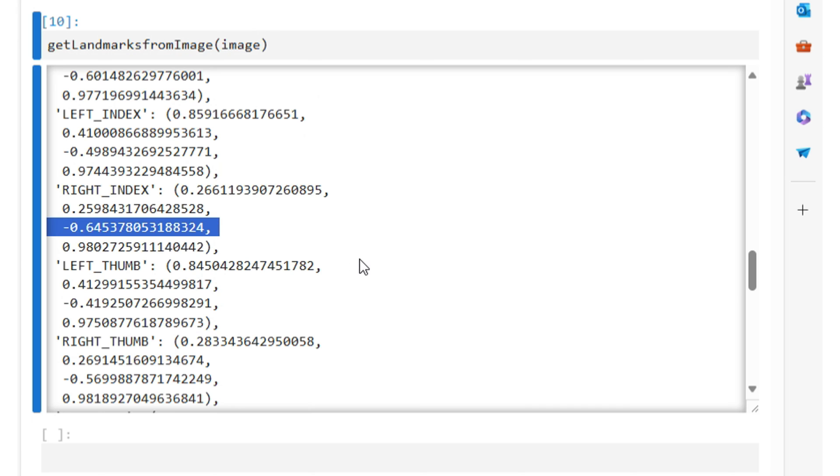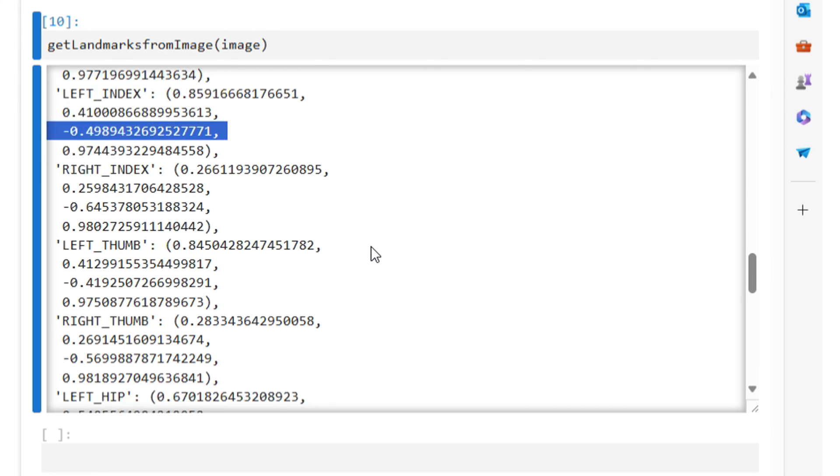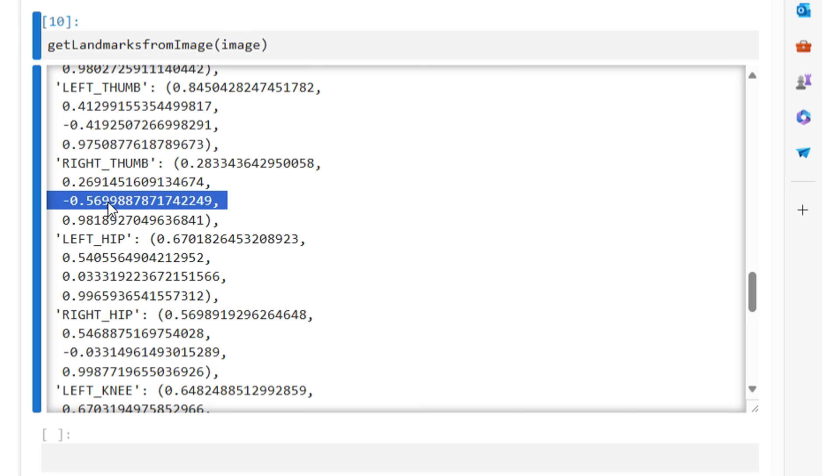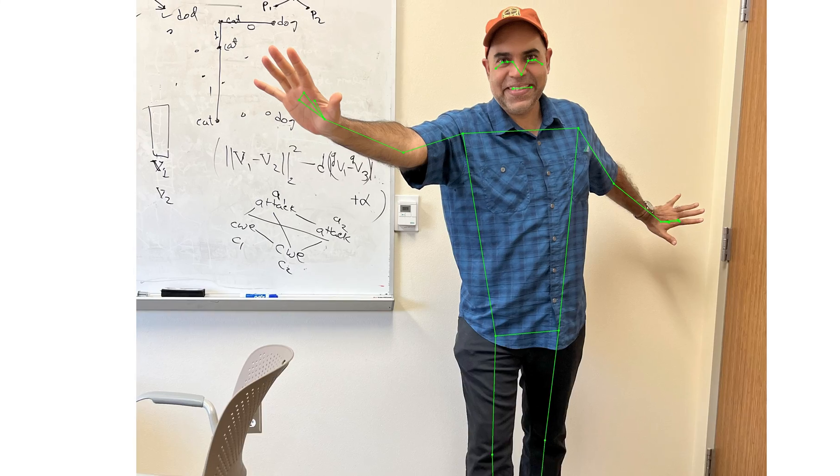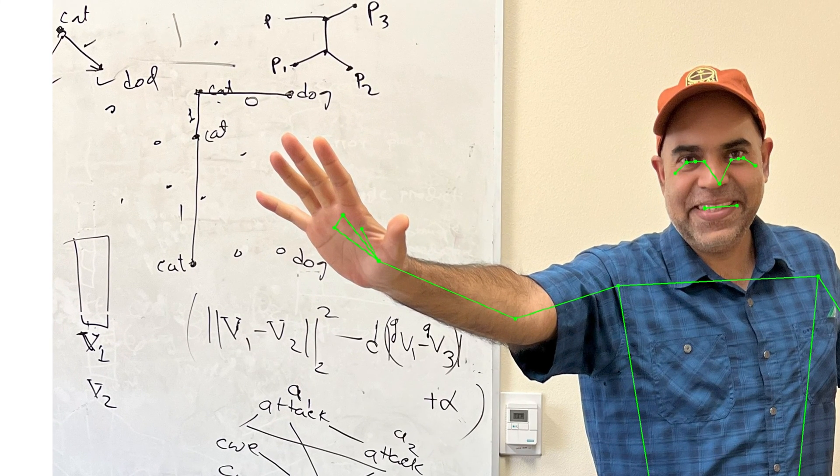Similarly, the right index finger has a smaller z value compared to the left index. The same trend is observed between the z values of the right and left thumbs. That is, my right hand is closer to the camera compared to my left hand.